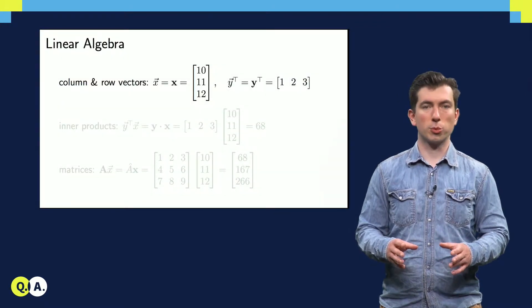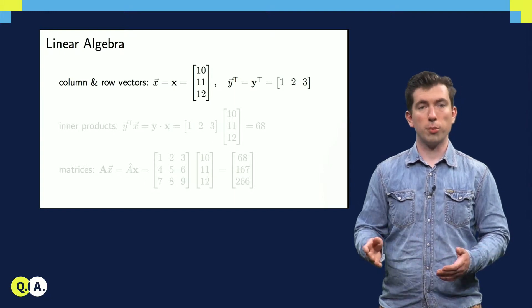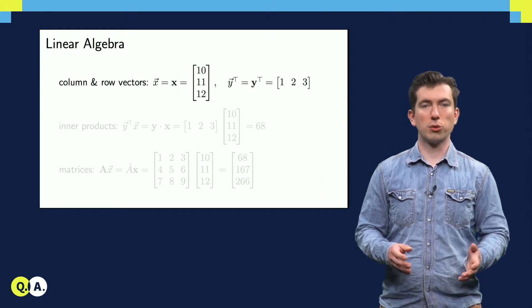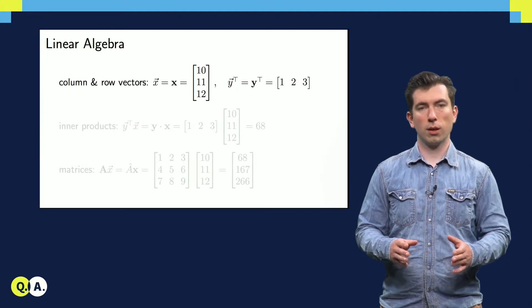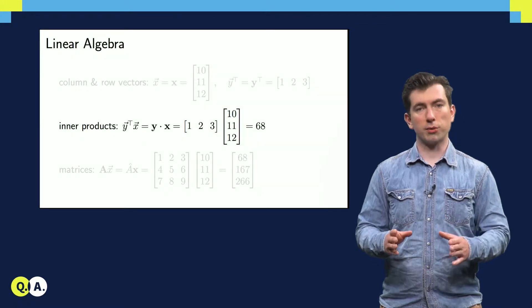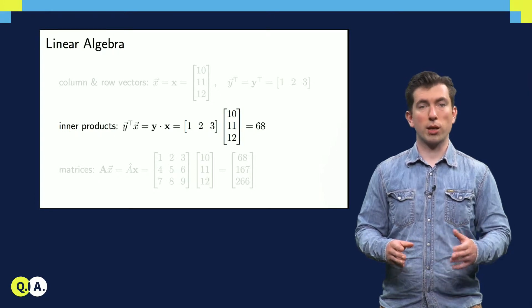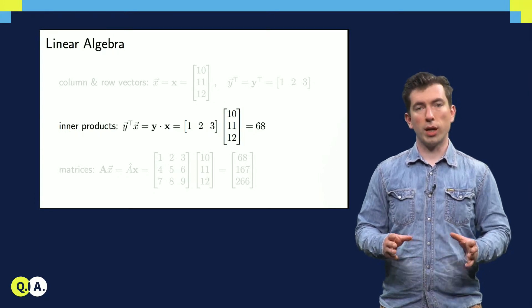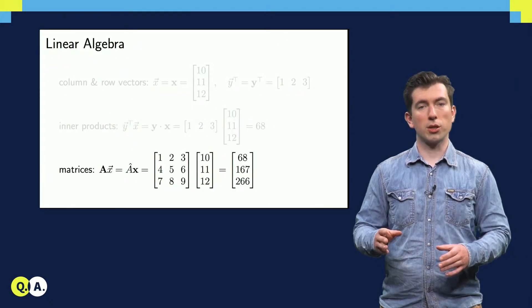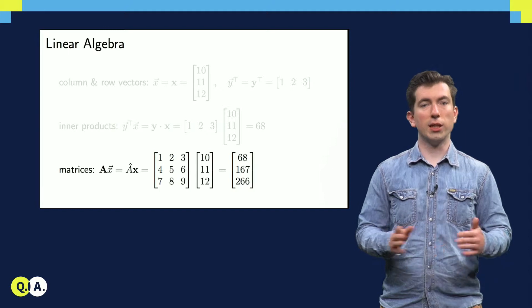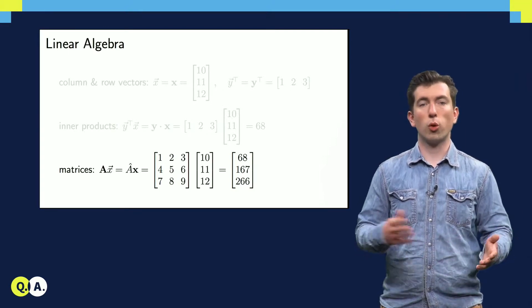You're likely already familiar with linear algebra, which has column vectors denoted with an arrow or with boldface type. It also has a transpose operation that maps column vectors to row vectors, and vice versa. We can calculate the inner product of two such vectors, either by transposing one of them and multiplying, or by writing the dot product explicitly. Either way, we get a scalar by taking the inner product of these two vectors. In addition, we can transform one vector into another using a matrix, which can be written using boldface type or a hat.